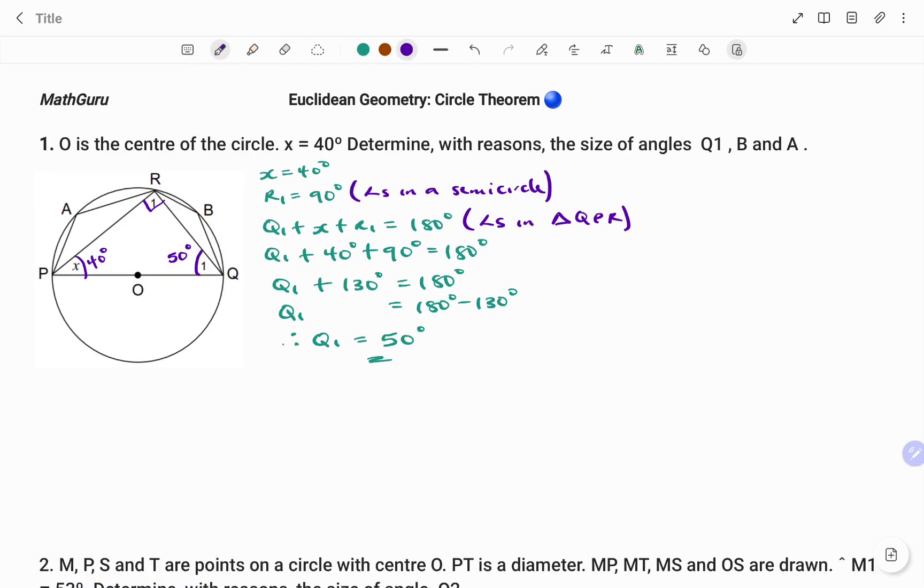For the second part, we have to find the angle B. To find the angle B, I will be using the cyclic quad. I'm going to highlight that in the diagram. That's QPRB. So I have x, that's angle at P, plus angle at B is equal to 180 degrees. And the reason being, the opposite angles of a cyclic quad.